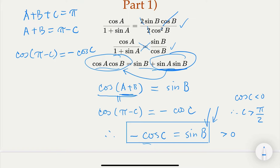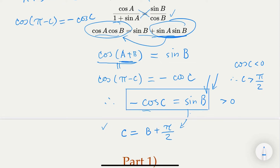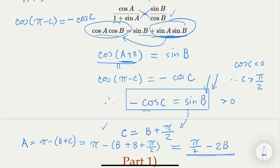From -cos C = sin B, we get the relationship: sine B equals cos(negative C), so C = B + π/2. And since A = π - B - C, substituting gives A = π - B - (B + π/2) = π/2 - 2B. These two relationships — c = b + π/2 and a = π/2 - 2b — are very useful.